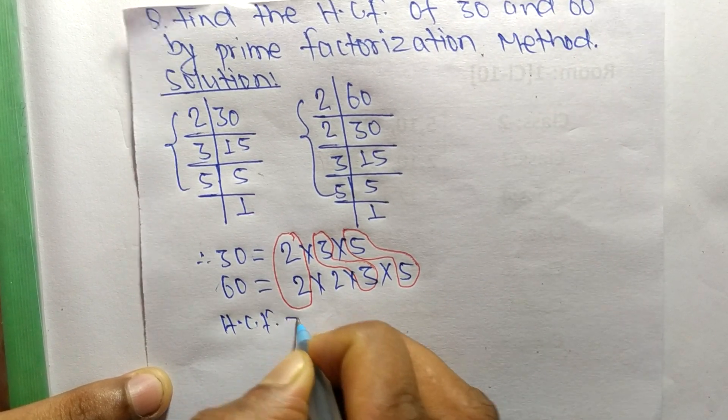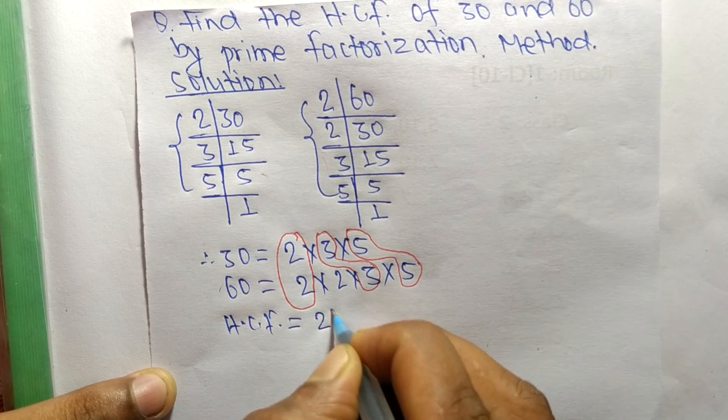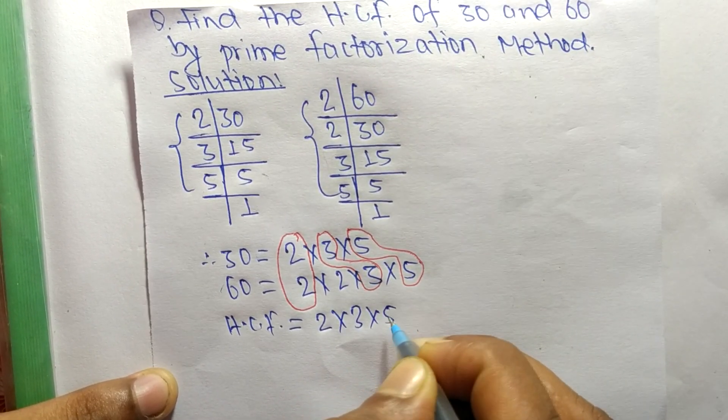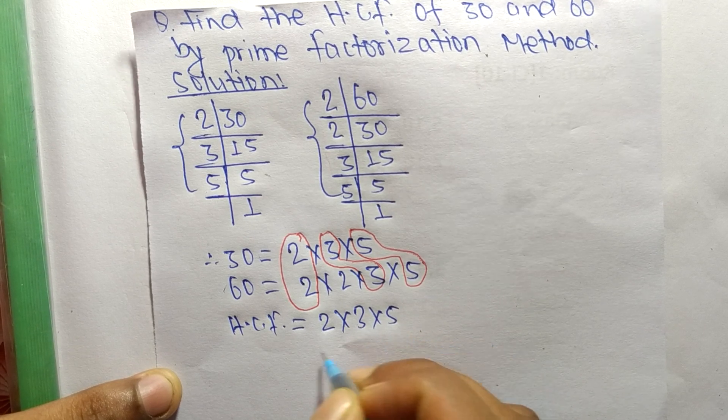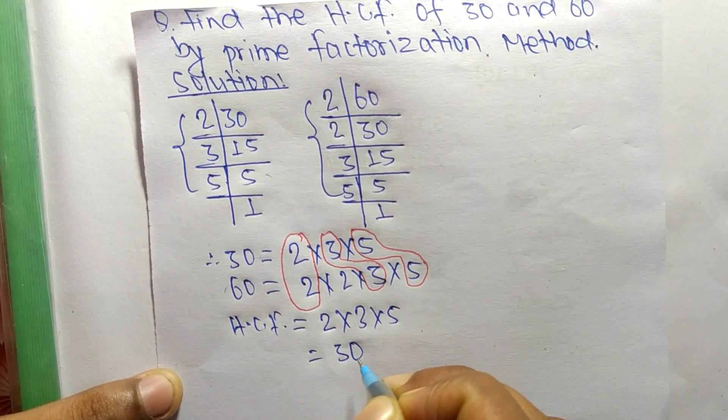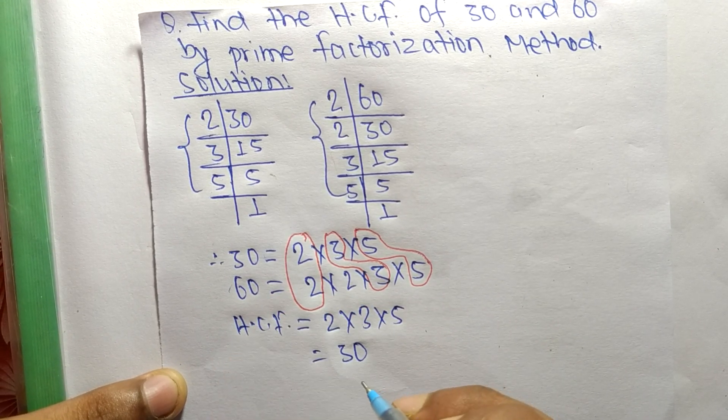So the HCF is equal to the common factors, which are 2 times 3 times 5. So it is 2 times 3 equals 6, and 6 times 5 equals 30. So 30 is the HCF of 30 and 60.